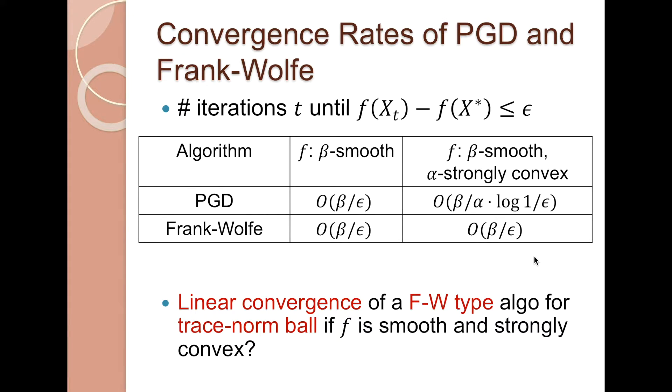Nevertheless, we can still ask for the specific constraint set, that is the trace norm ball, whether we can obtain linear convergence of a Frank-Wolfe type algorithm if the objective is both smooth and strongly convex.